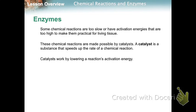Some chemical reactions are too slow or have activation energies that are too high to be easily available in living things. The way these chemical reactions happen is by way of catalysts — a substance that speeds up the rate of a chemical reaction by lowering the reaction's activation energy.